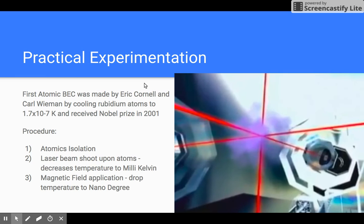To drop the temperature to nanokelvin, an evaporative cooling methodology is used. A magnetic field is applied around the atoms, which can be imagined as a mug-like structure. The strength of the magnetic field is decreased slowly, and atoms with higher energies tend to jump out of the magnetic field.